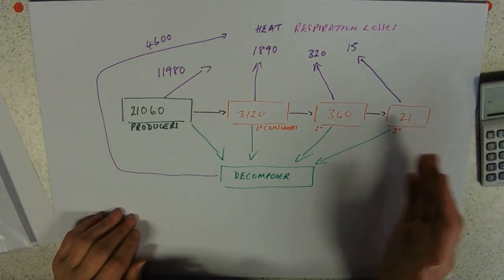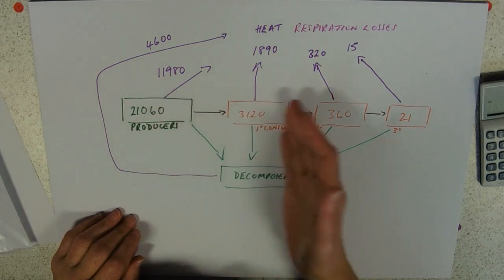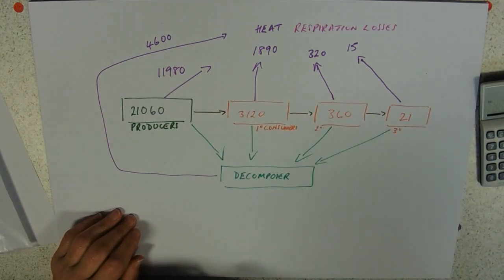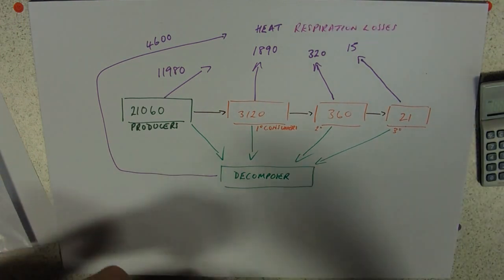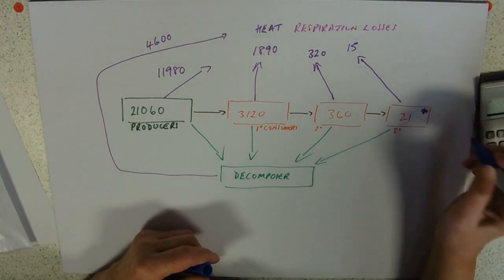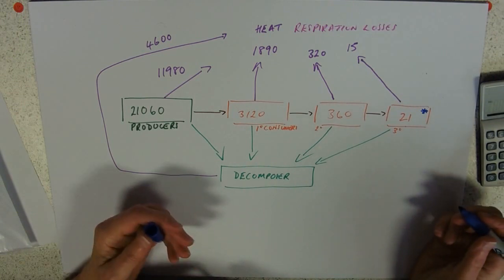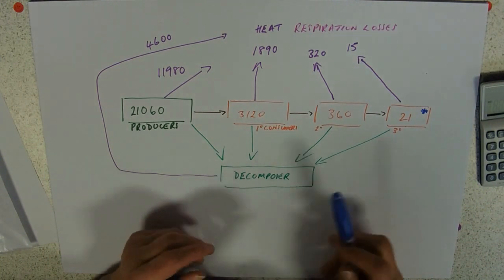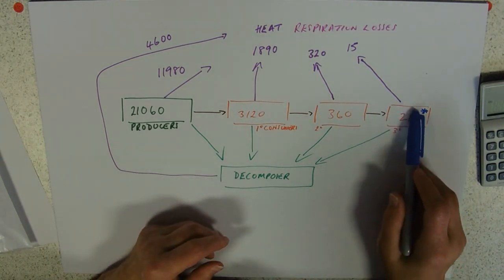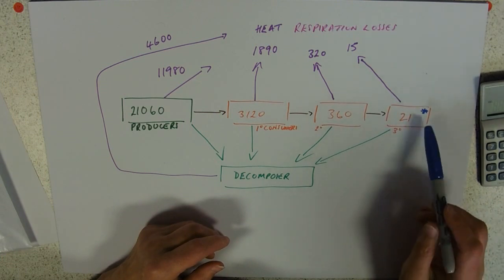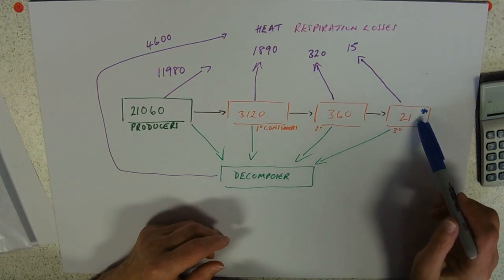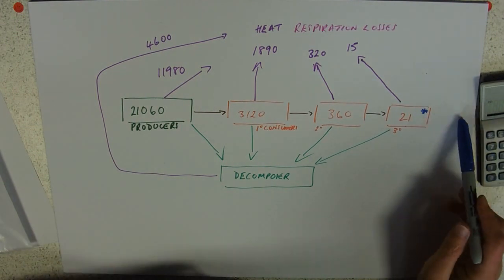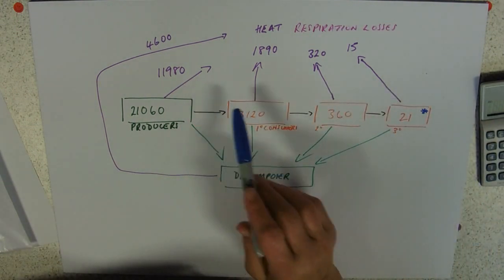They could ask you how many steps there are in the food chain. By far the most common question is to ask about the highest level and say, why isn't there another level? If you're using information from the data, the energy here is simply not enough left in the food chain to sustain another level because of all these respiration losses.